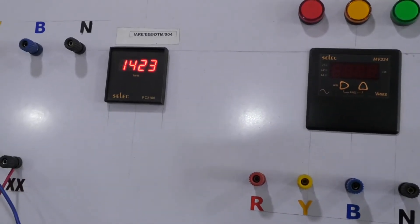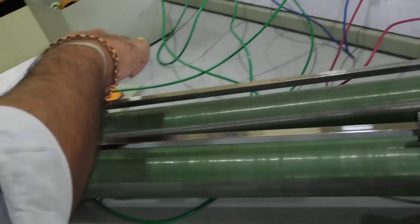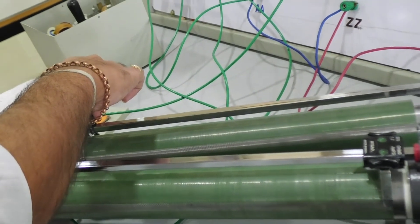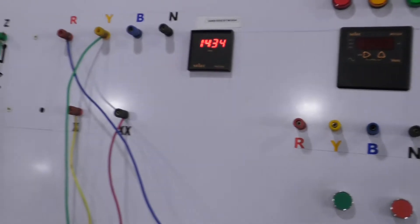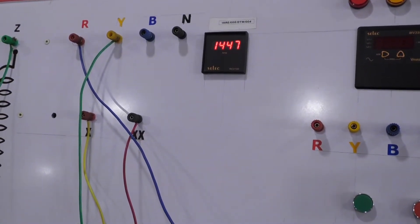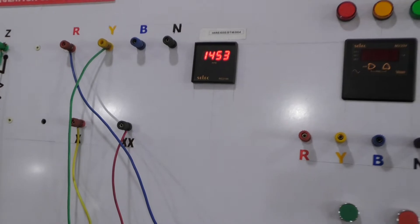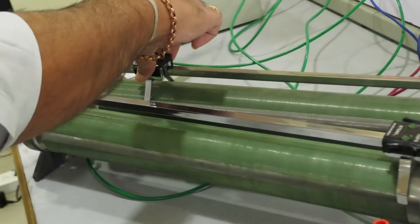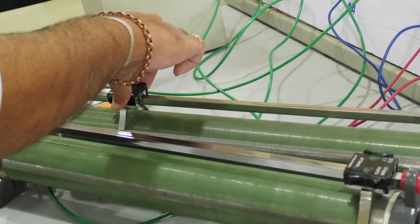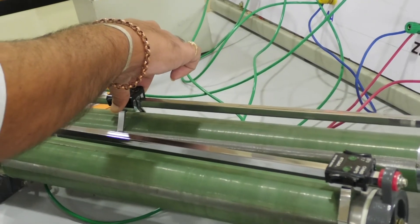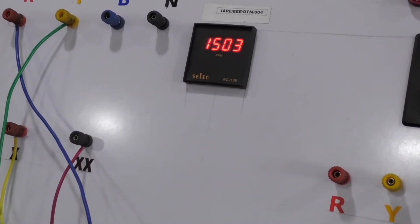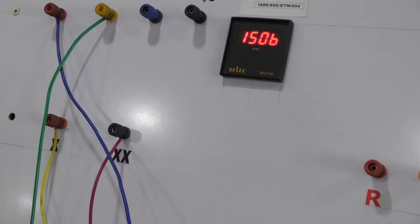You can observe here — by increasing the rheostat, I will set the speed. I am slowly increasing, and you can observe the speed is changing. I have set it up to 1500 RPM.